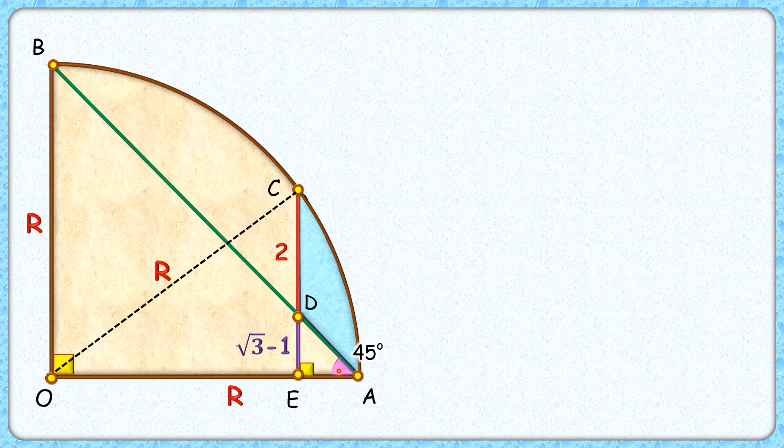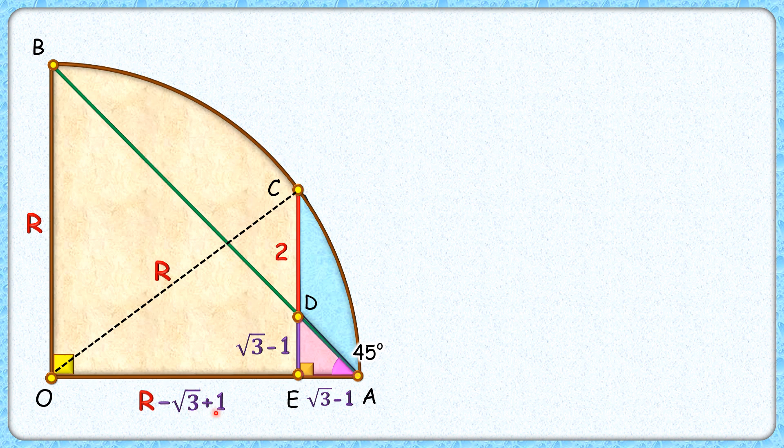As we know this angle A, in triangle DEA this angle D is also 45 degrees. It's an isosceles triangle, so EA length will be the same root 3 minus 1. Thus OE length will be the full radius R minus root 3 minus 1, so OE length will be R minus root 3 plus 1.